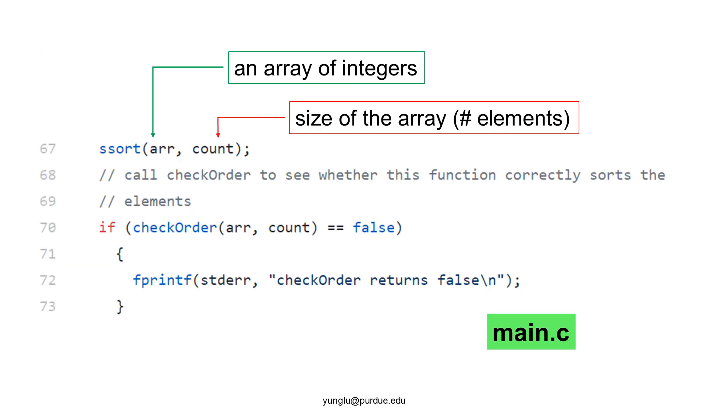The second homework teaches you important concepts about testing, how to create self-checking code and generate test cases. Let's start with main.c. The selection sort function is called on line 67. This function has two arguments.